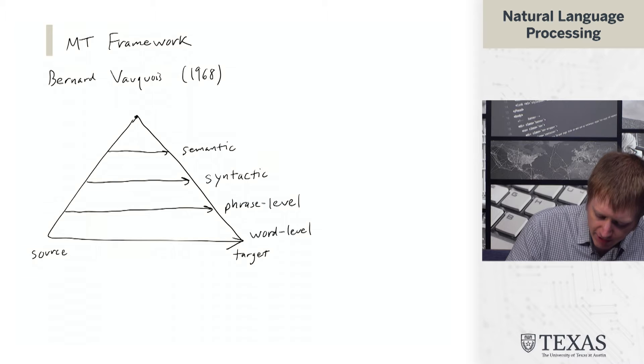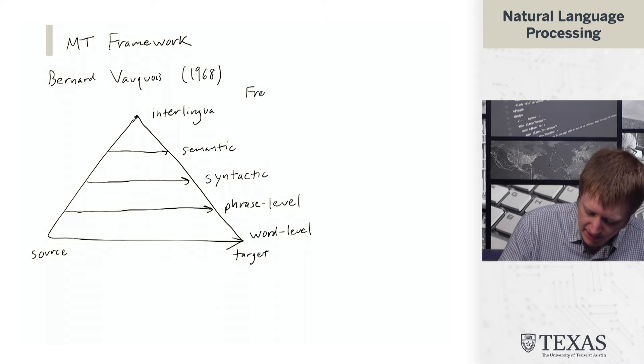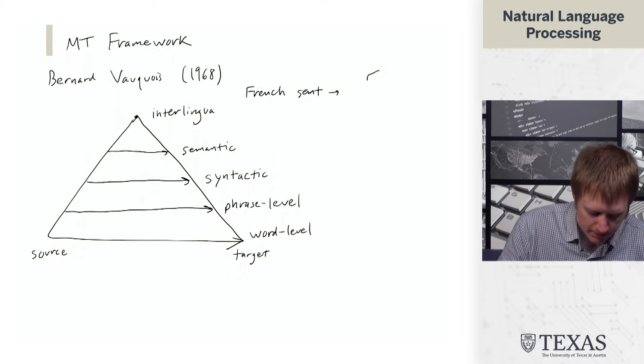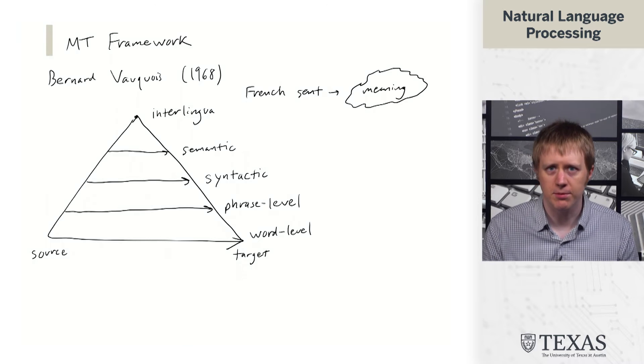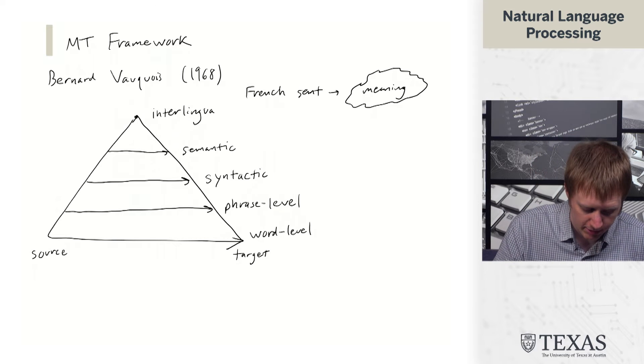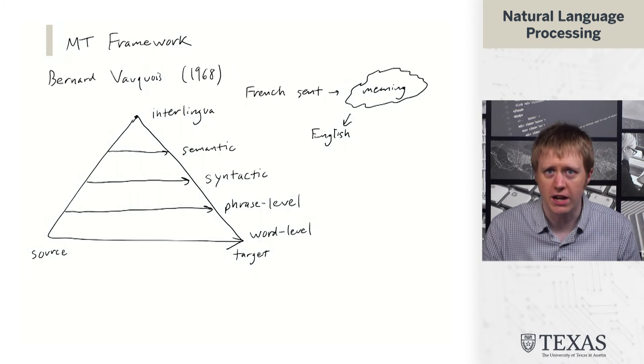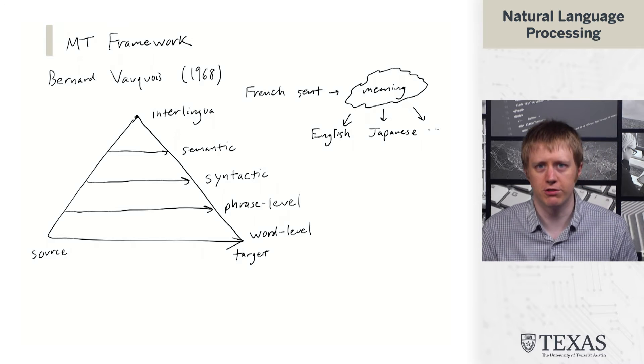And then at the top we have what's called interlingua. This is largely an abstract concept. The basic idea is that if we have a French sentence, we could map it into some kind of blob that captures the meaning of that sentence in some language-independent way. And then we should be able to convert that blob or generate from that blob into English or Japanese or whatever language you want to translate into.